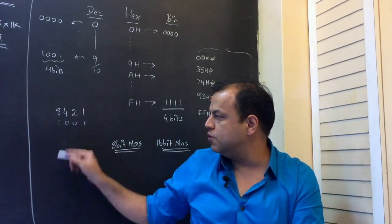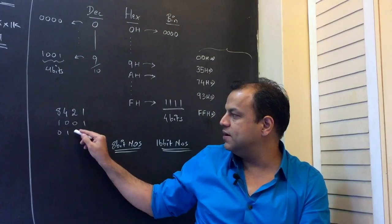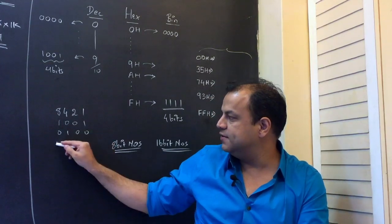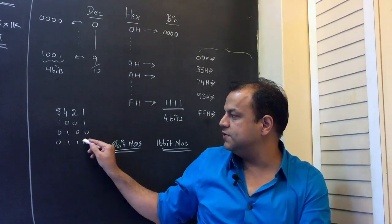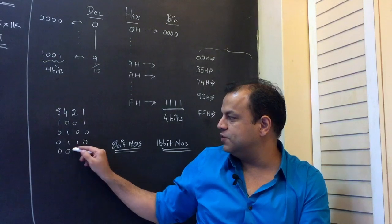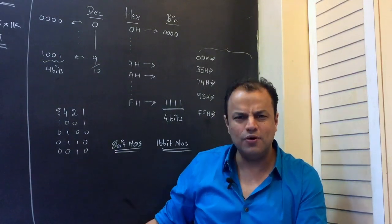If I want 4, that is 0100. If I want 6, that is 0110. If I want 2, that is 0010, and so on.